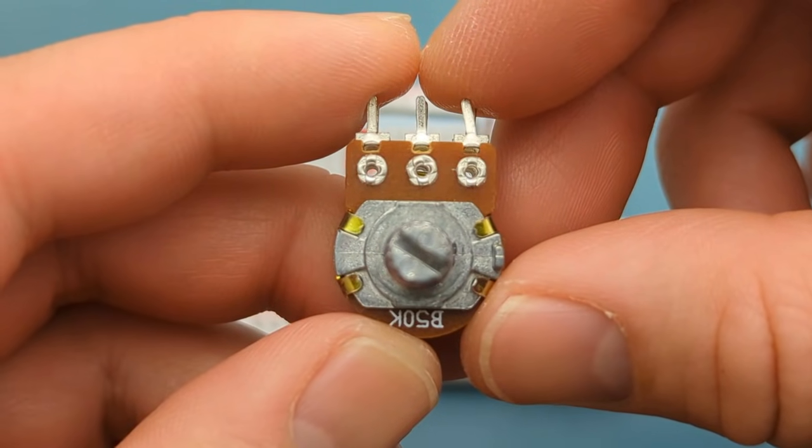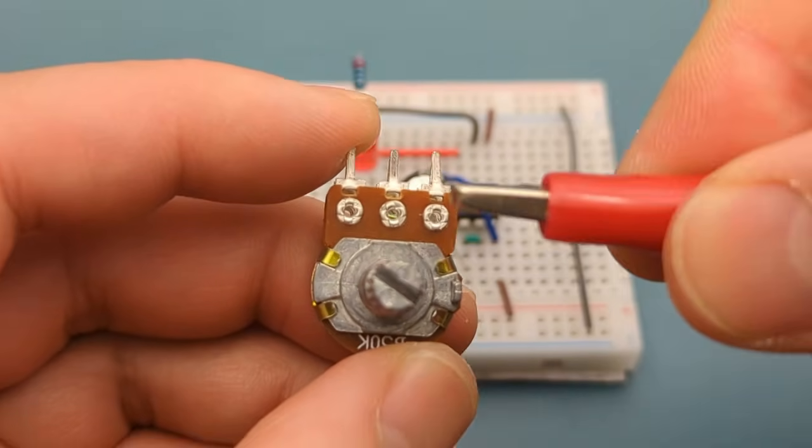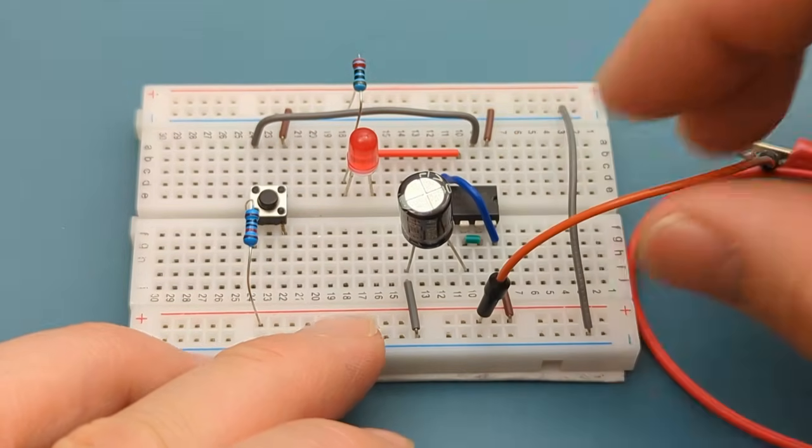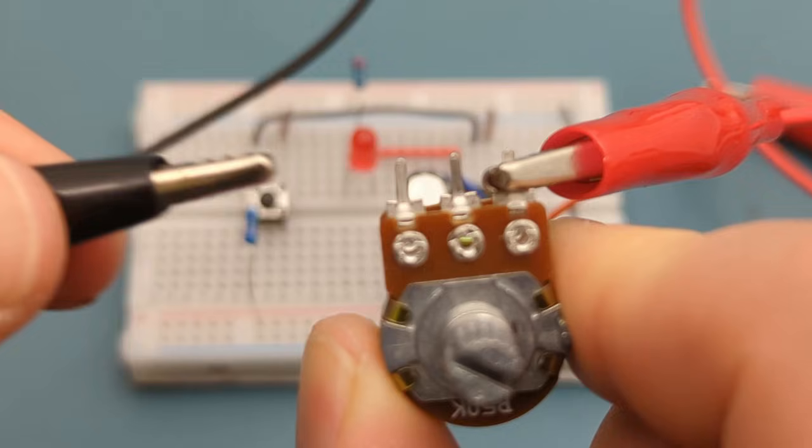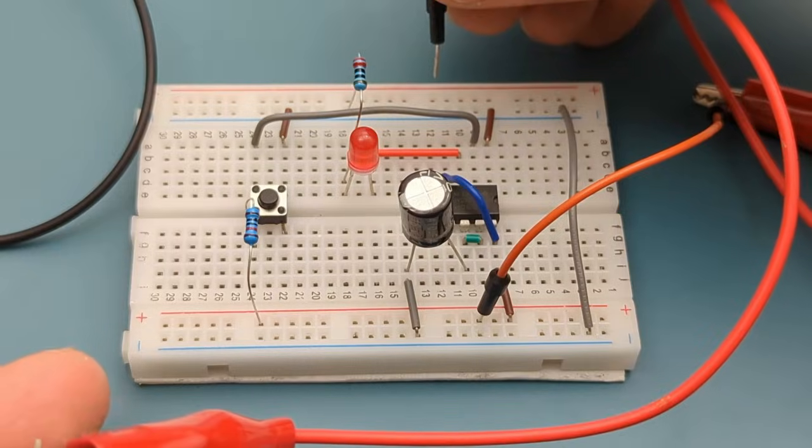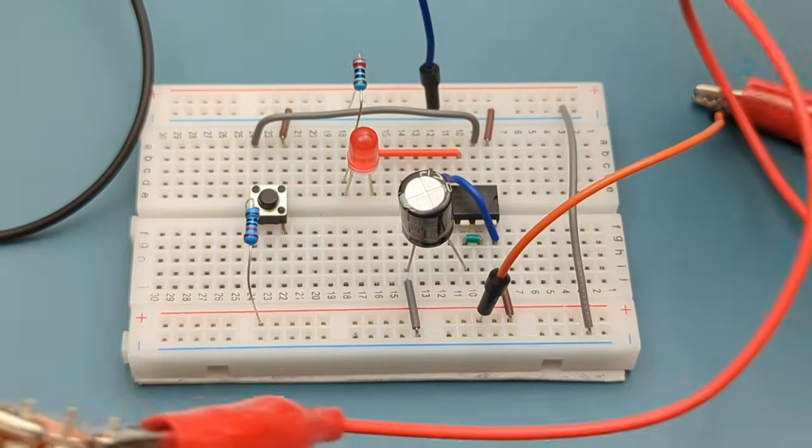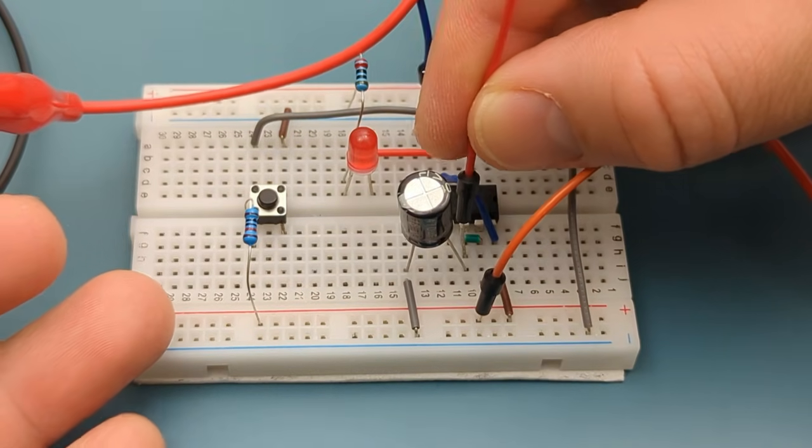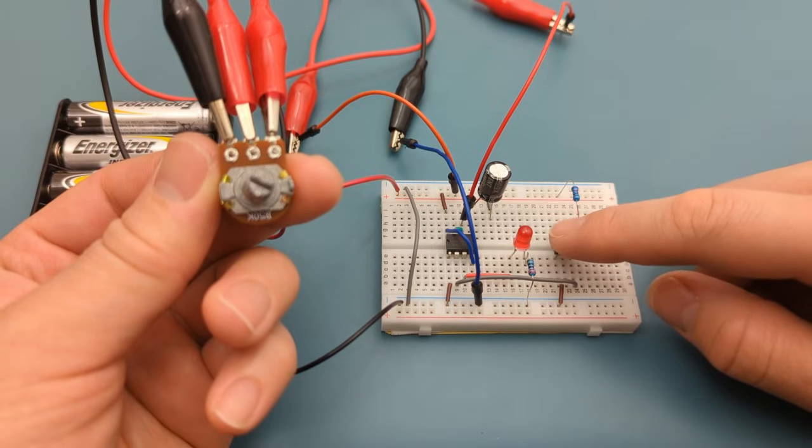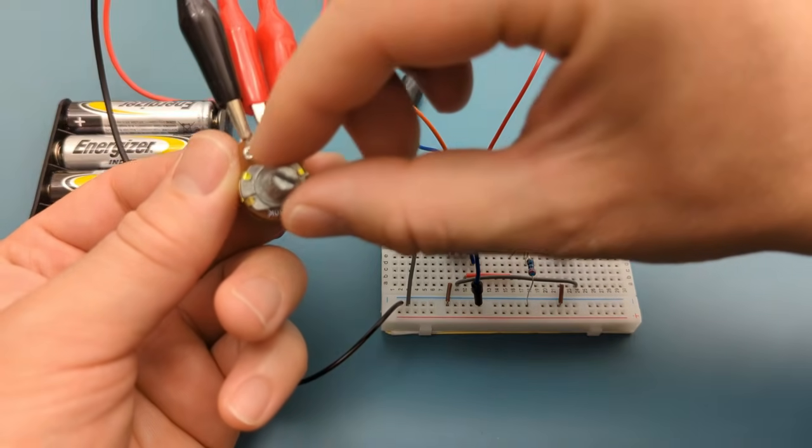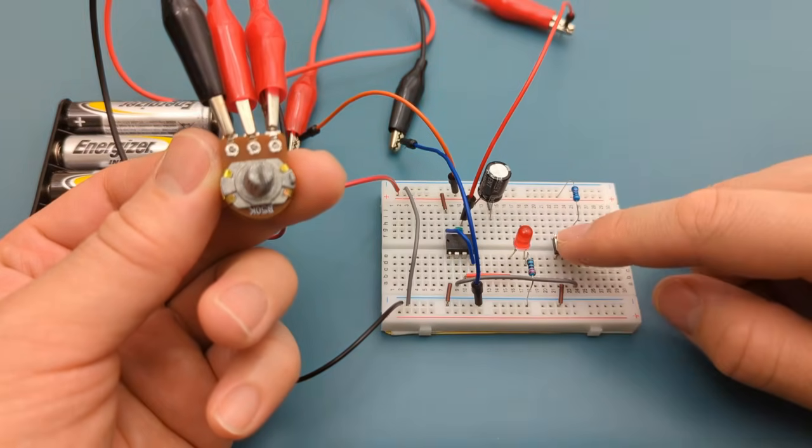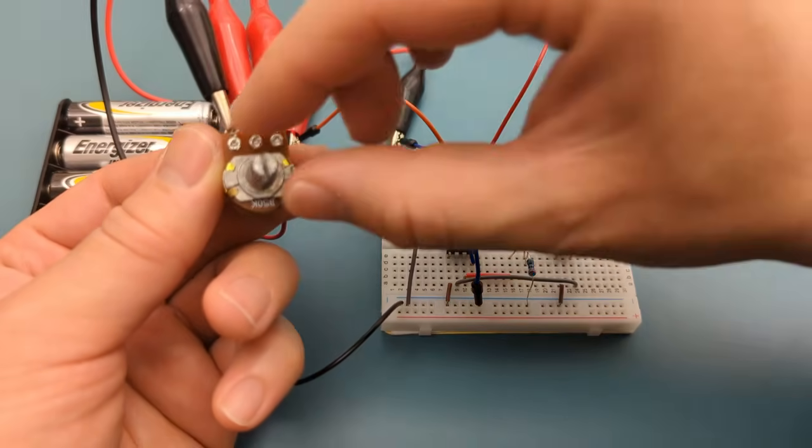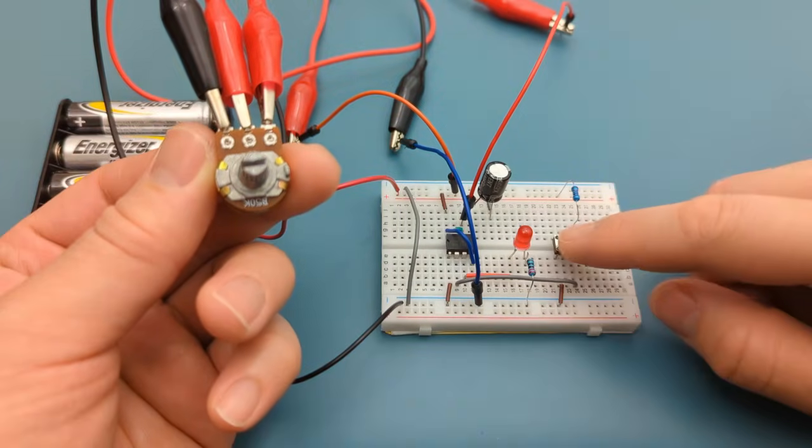Another way to adjust the timer is to use a potentiometer. Connect the right terminal to the positive rail. Connect the left terminal to the negative rail. Connect the middle terminal to pin 6. When you press the switch, the LED turns on and off. When you turn the knob, the LED stays on for a few seconds. As you continue turning the knob, the resistance rises, causing the LED to stay on for a longer period.